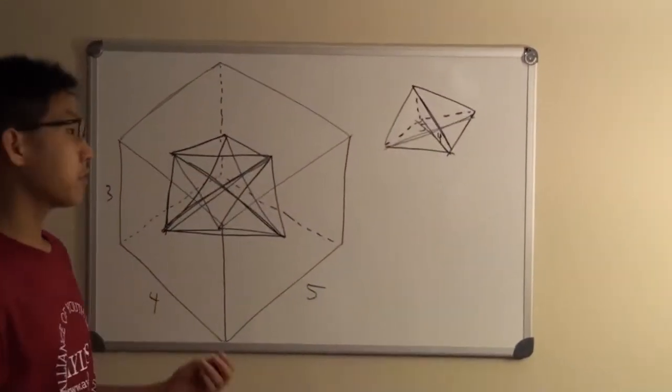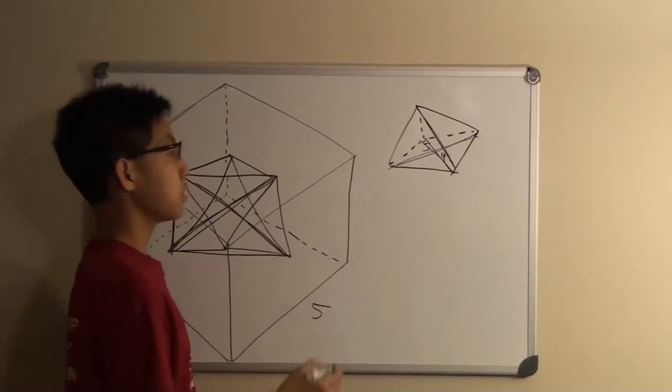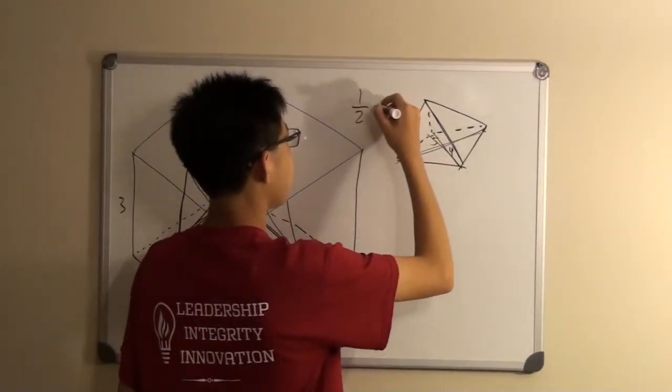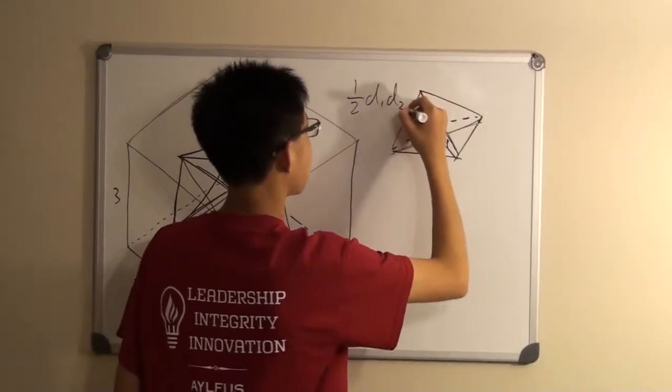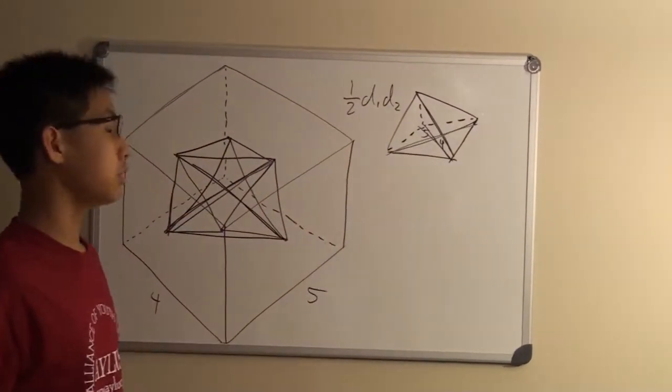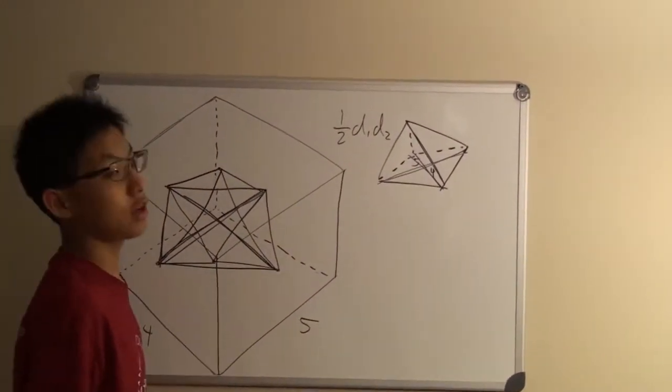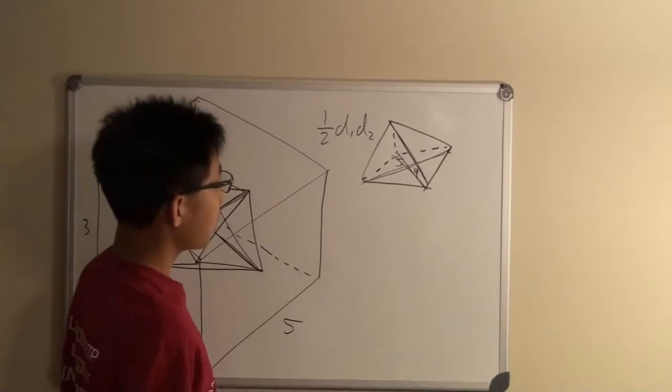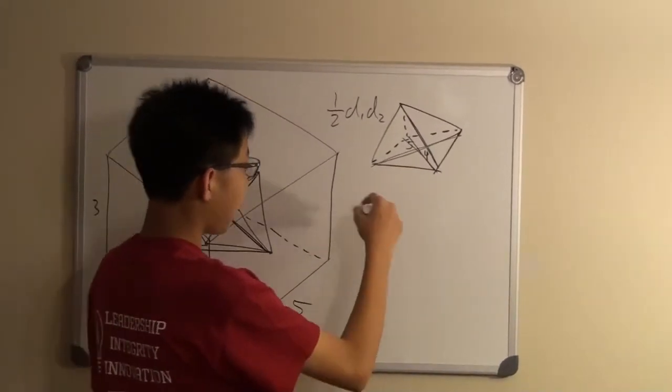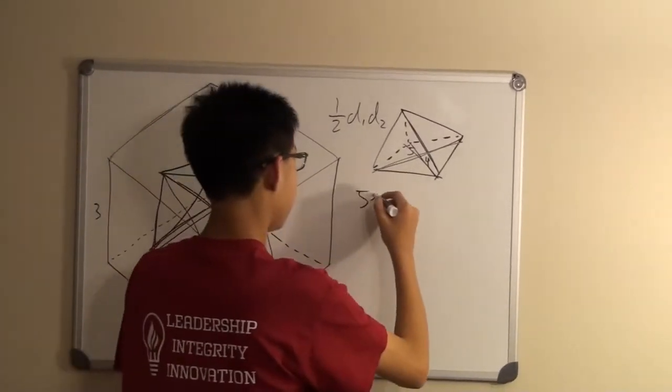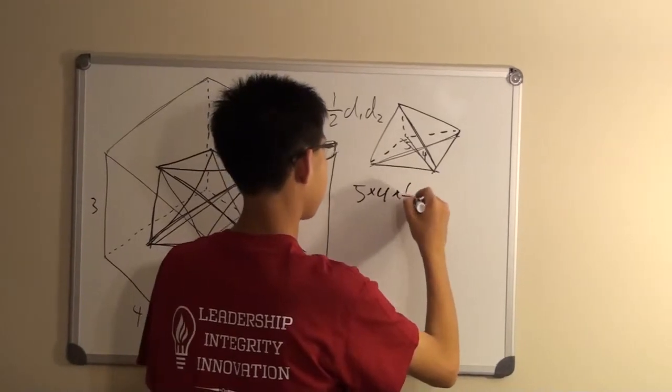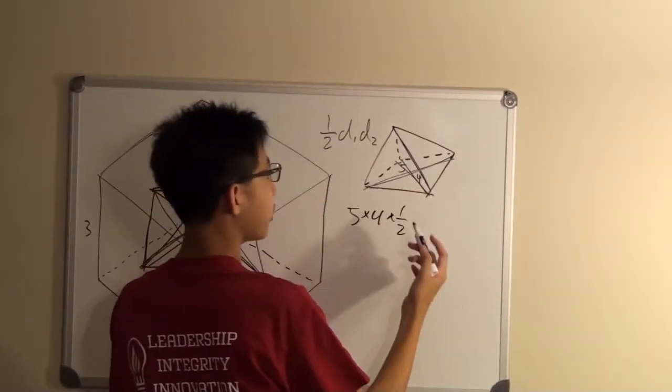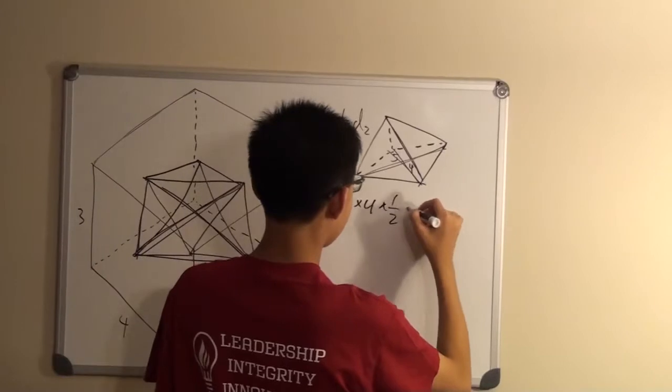And then the formula for finding the area of a rhombus is one half d1 d2. So d1 and d2 would be the diagonals, and one half is just one half. So it would just be 5 times 4 times a half, and so the area of the base would be 10.